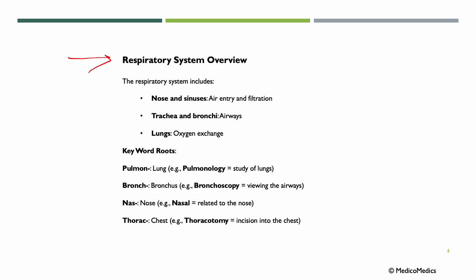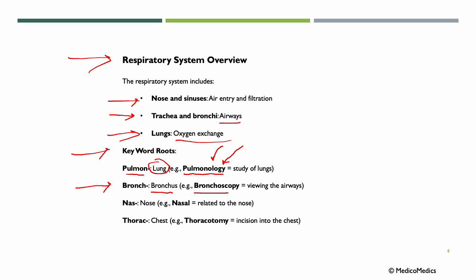Now let's look at the respiratory system. The respiratory system includes the nose and sinuses — the place of air entry and filtration — the trachea and the bronchi, which are our airways, and then the lungs, where oxygen is exchanged. Returning to terminology: PULMON means lung. Adding LOGI and the combining vowel, we have PULMONOLOGY, the study of the lungs. BRONCH refers to bronchus — BRONCHOSCOPY means viewing the airways, as SCOPY means viewing.